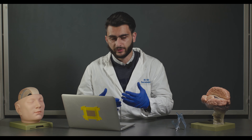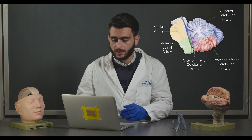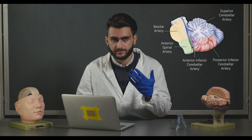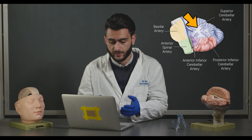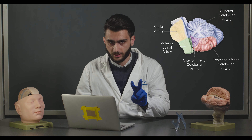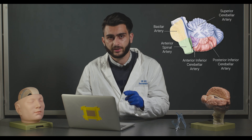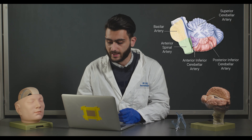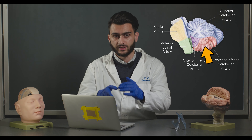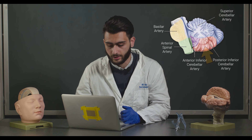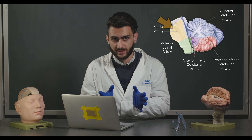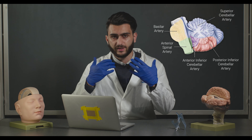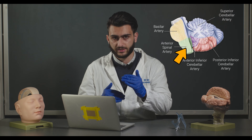Moving away from the cerebrum, we have what covers the cerebellum as well as the brainstem. We have first the superior cerebellar artery, which covers much of the superior aspect of the cerebellum. Next we have our two inferior cerebellar arteries: the anterior inferior cerebellar artery, which covers the anterior inferior portion of the cerebellum, and the posterior inferior cerebellar artery, which covers the inferior posterior section. Next is the basilar artery, which has branches known as the pontine arteries because they feed much of the pons. Finally we have the anterior spinal artery, which feeds much of the caudal aspects of the brainstem.